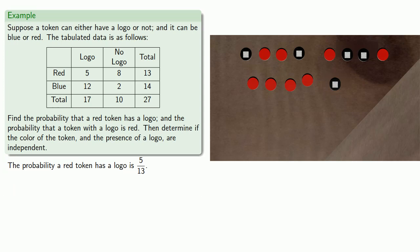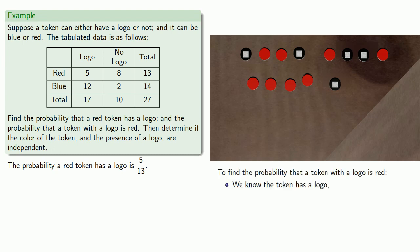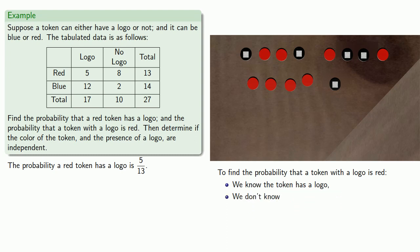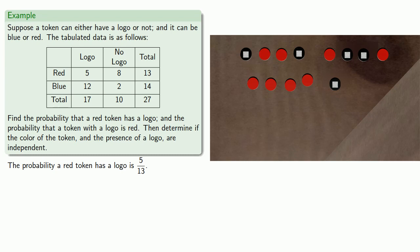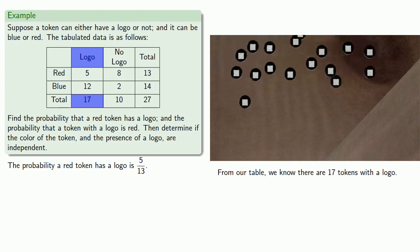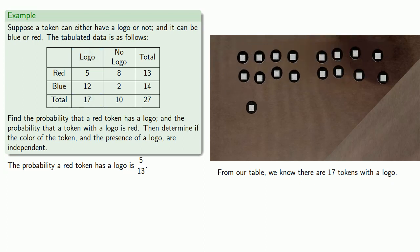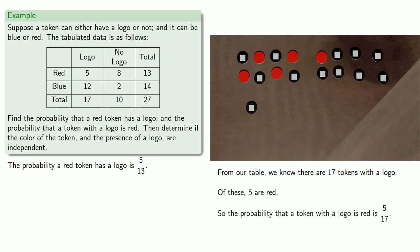Now for the second probability — the probability that a token with a logo is red. Reading carefully, we know the token has a logo, and we don't know if the token is red. From our table, there are 17 tokens with a logo, and 5 of those tokens are red. So the probability that a token with a logo is red is 5 out of 17.